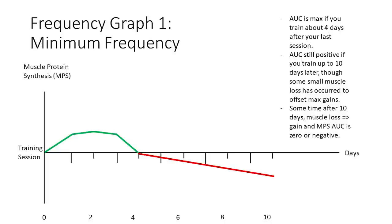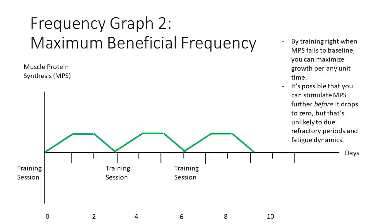If someone said they could only train the same muscle group once every 12 days and expected guaranteed growth, the answer for an intermediate is probably not. But someone training a muscle every six days is almost certainly going to cause robust, reliable muscle growth. The top end of the frequency overload range is however many MPS curves from training sessions you can fit in a week without fatigue preventing those curves from being generated at all.